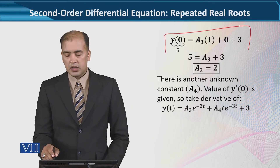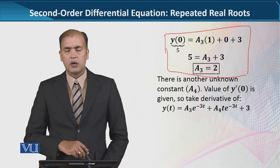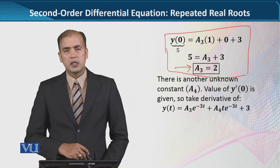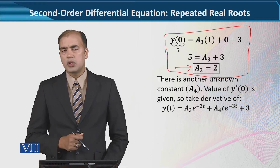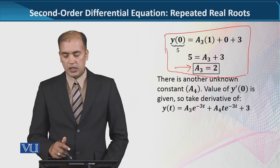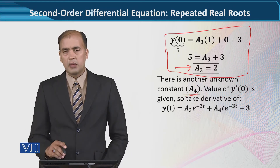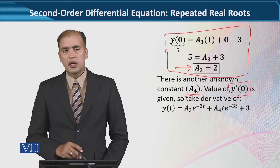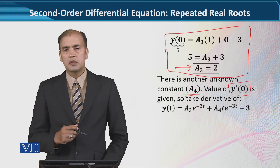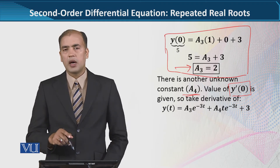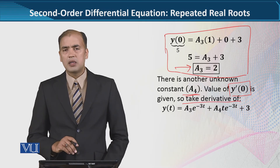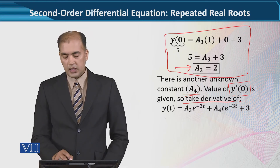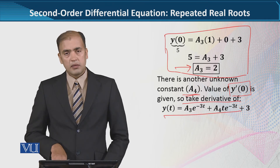Algebraic steps کو solve کریں گے - یہ میں rehearsal کے لیے رکھ رہا ہوں - اور a3 کی value 2 آئے گی۔ یہ ہم نے note کر لی کیونکہ ایک unknown کی value مل گئی۔ اب a4 کی value figure out کرنے کے لیے ہمارے پاس y'(0) کی value given ہے، تو ہمیں y'(t) چاہیے جس میں t کی جگہ zero لگائیں۔ اس لیے y(t) کا derivative لے کر y'(t) develop کریں گے۔